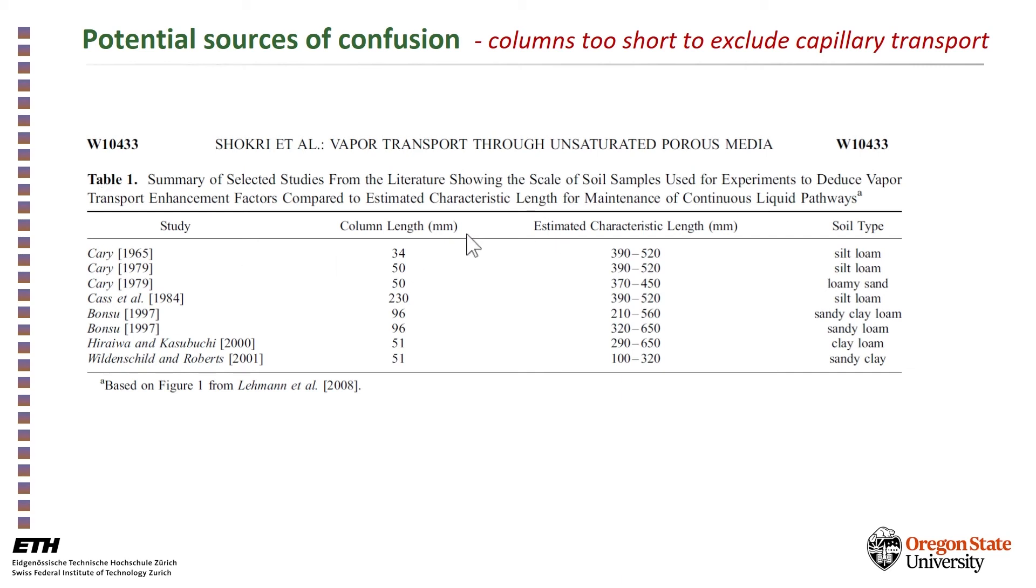So here is an example from a paper by Nima Shokri back in 2012, showing that these are the column lengths that are used by different authors, they are of the orders of maybe 50 mm, maybe 20 mm, 200 mm,